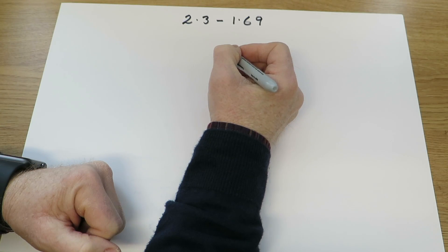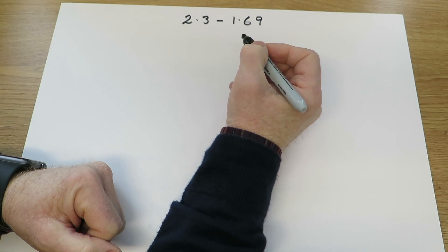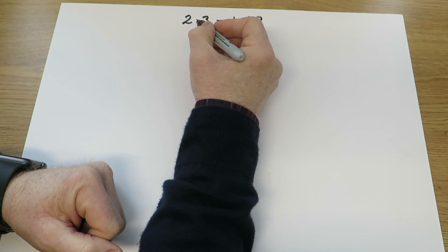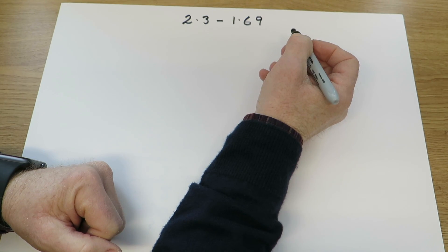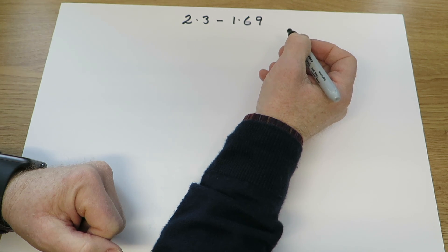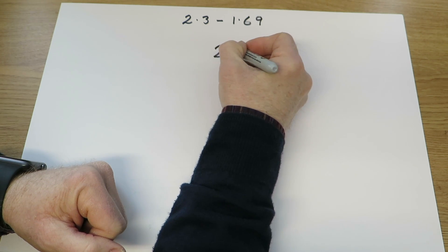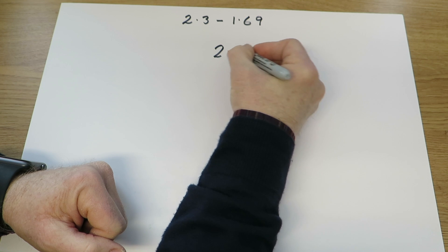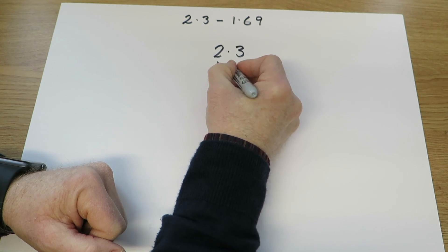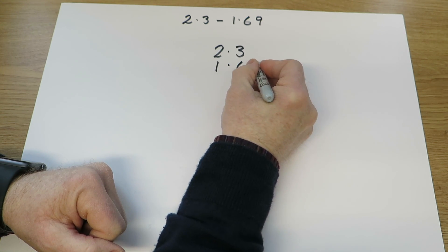The children are also able to calculate the smaller numbers involving decimals. Looking at questions such as 2.3 minus 1.69, they will know how to use columns to find the answer. 2 in the units, decimal point, 3. 1 in the units, decimal point, 6, 9.